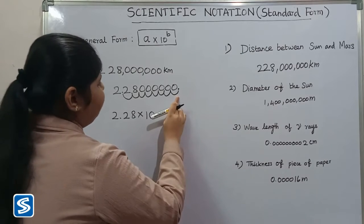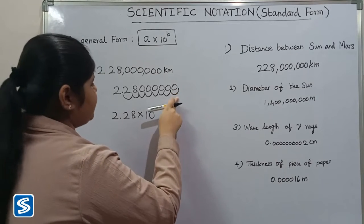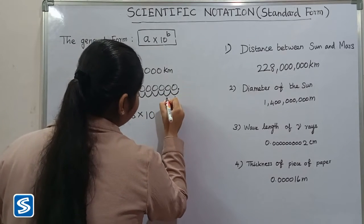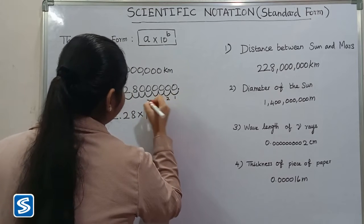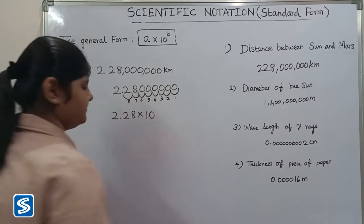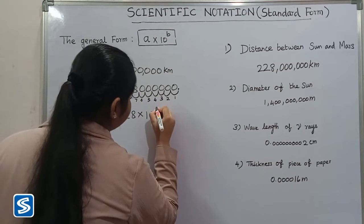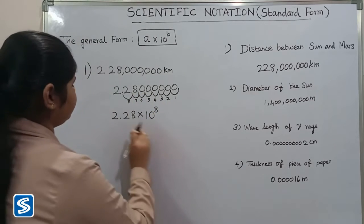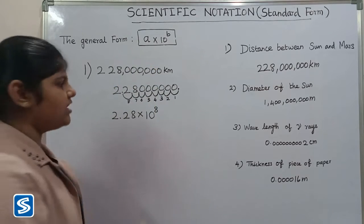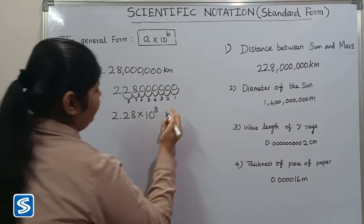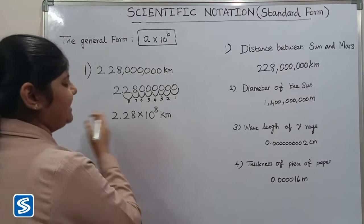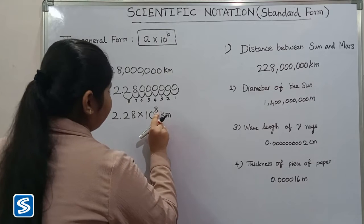To find the exponent value, we count how many places the decimal point was moved: 1, 2, 3, 4, 5, 6, 7, 8. So the exponent value is 8. The decimal point was moved to the left, so the exponent is positive. Therefore, the scientific notation for this number is 2.28 × 10^8 kilometers.